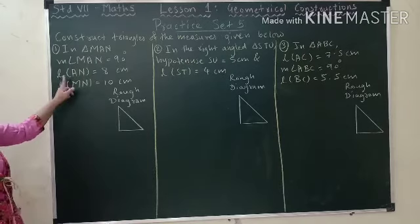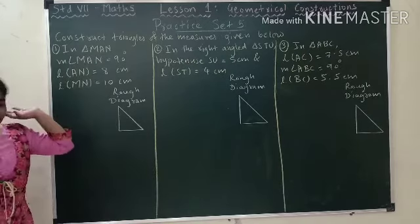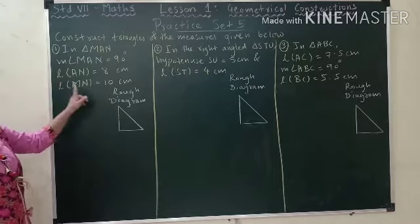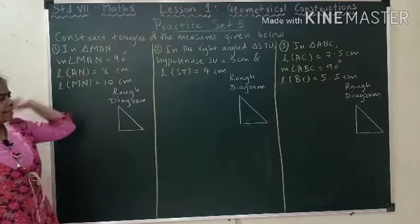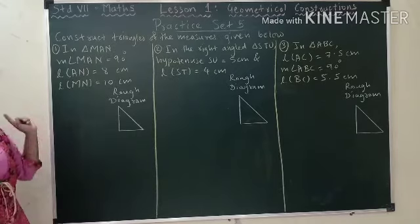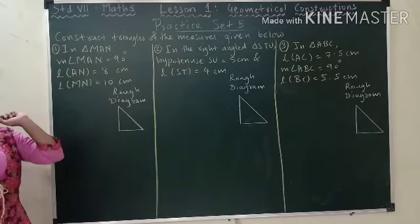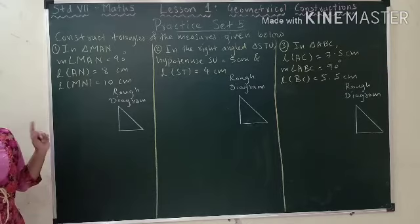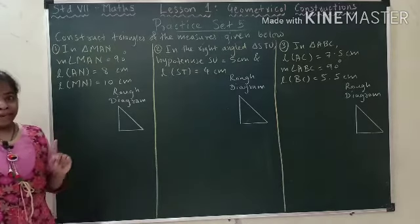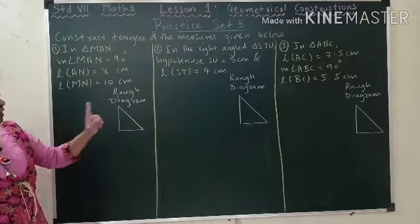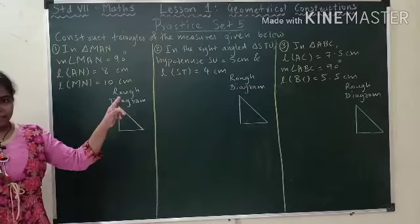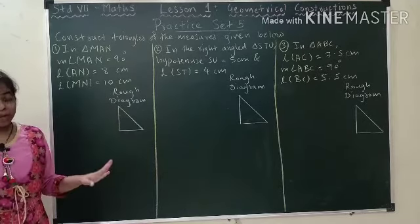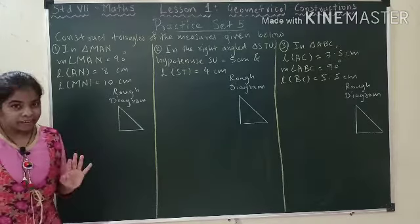In triangle MAN, measure of angle MAN is equal to 90 degrees. Length of AN is equal to 8 cm, length of MAN is equal to 10 cm. Because there is a 90 degree angle, all the questions of this exercise will be based on making a triangle of 90 degrees. In short, in this practice set we will be drawing only the right angled triangles.